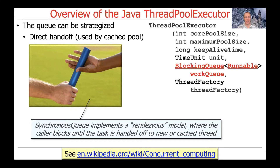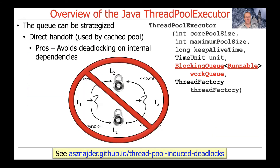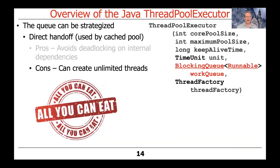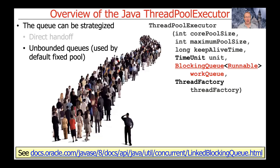This is sometimes called the rendezvous model of computing, where the caller blocks until the task is handed off to a new thread or to a cached thread. The advantage of the direct handoff model is you don't have to worry about deadlocking on internal dependencies like a fixed size queue, because there will always be a thread to run the work even if a new one has to be allocated. The downside is that under bursty traffic load, if lots of tasks arrive at the same time, you can end up creating a very large number of threads.